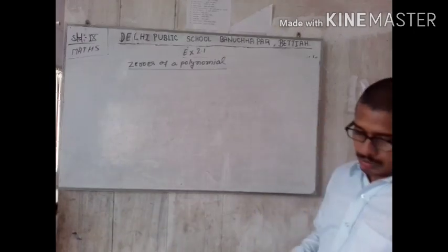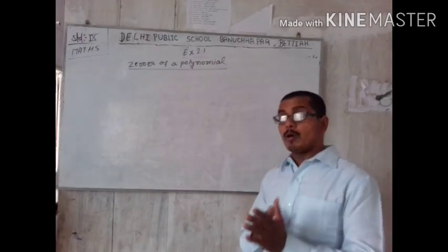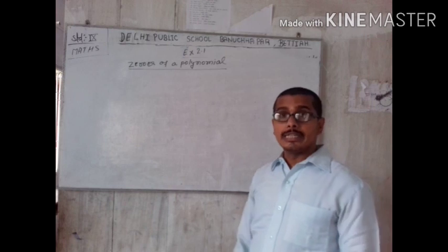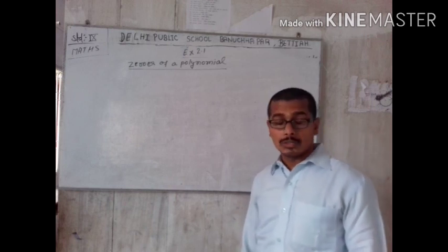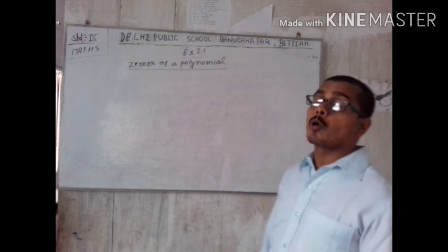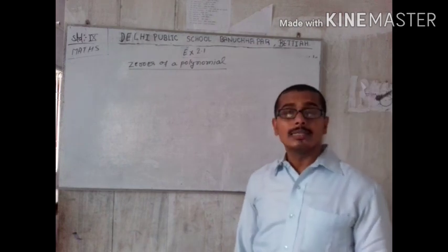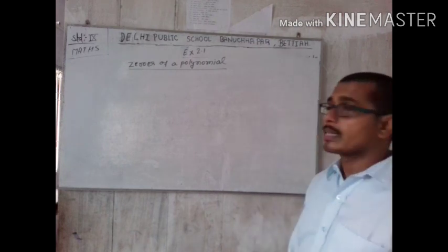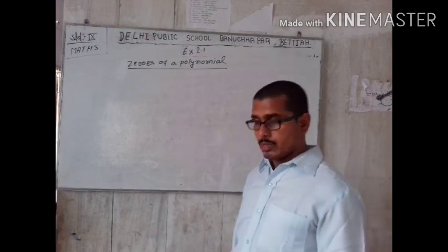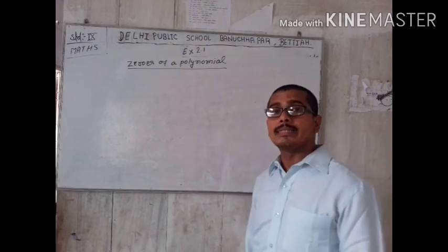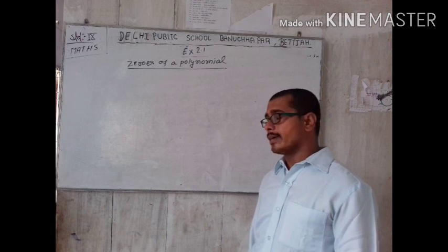Before this, in the first lecture we discussed about polynomial — what is called polynomial, about its degree, about its terms, about its coefficient. On the basis of number of terms we also classified it as a monomial, binomial, trinomial and so on.